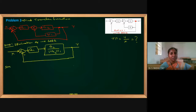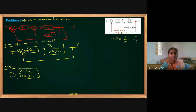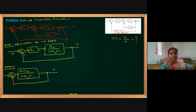In step 2, two blocks are in series. If two blocks are in series, we can multiply them. So the combined block is G1 times G2 divided by (1 plus G2·H1), converting to a single block. The rule followed here is combining blocks in series. G1 means G1 divided by 1, so I have just multiplied them.